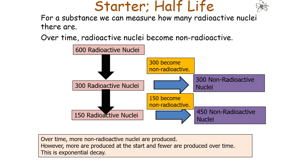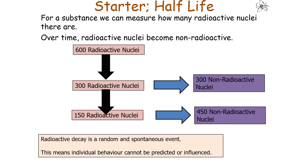This is called exponential decay. Radioactive decay is a random and spontaneous event: individual behaviour cannot be predicted (random), and individual behaviour cannot be influenced (spontaneous).